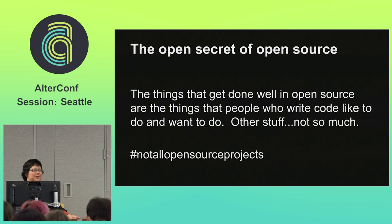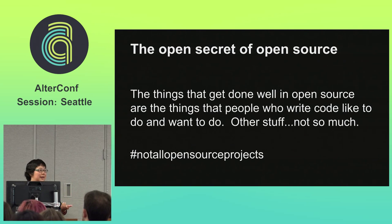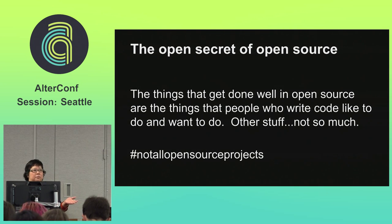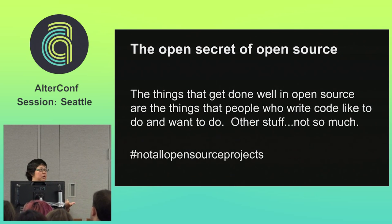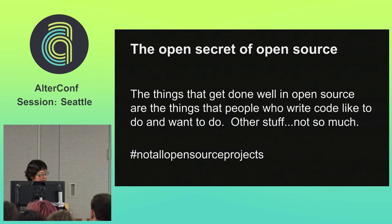The open secret of open source, which everybody knows but people don't tend to articulate, is that the community tends to be made up of people who want to write code. The things that get done well in open source are the things that people who write code like to do and want to do. Other stuff kind of falls off the end of the universe. This is not true of all projects — there are some really notable exceptions like Seth Vargo, Fletcher Nickel, Jordan Sissel — people who really care deeply about making the entire experience of interacting with their project good. But there are a lot of projects that do not operate on those terms, so set your expectations.